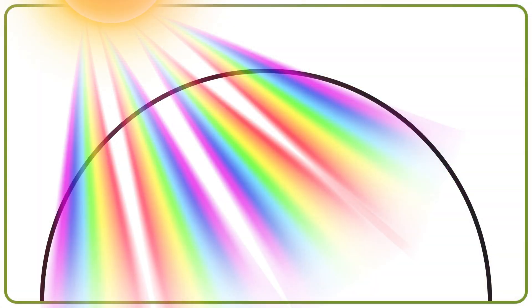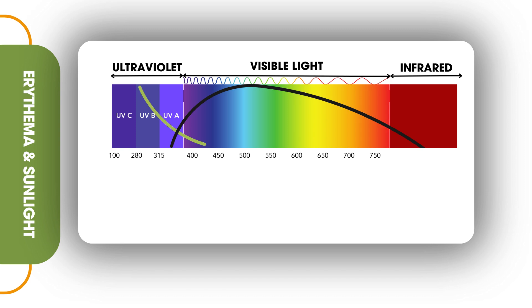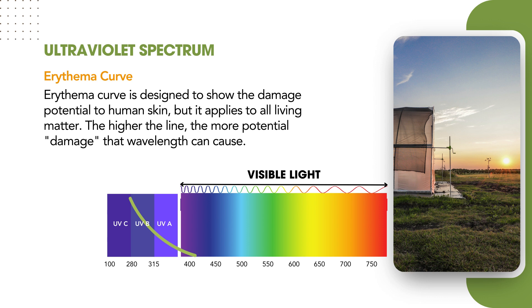Think about all of these different light spectrums entering the greenhouse at the same time. The UV spectrum falls to the left of the visible light that we see with the human eye. This is all measured in an increment called a nanometer, and typically this is all below 400 nanometers. There's something called the atherma curve — I represented that with a very basic green curve on the left — and the visible light spectrum, shown with a black curve, is what the human eye detects. The atherma curve is designed to show the damage potential to human skin, but it applies to all living matter. The higher the line, the more potential for damage that wavelength can cause.